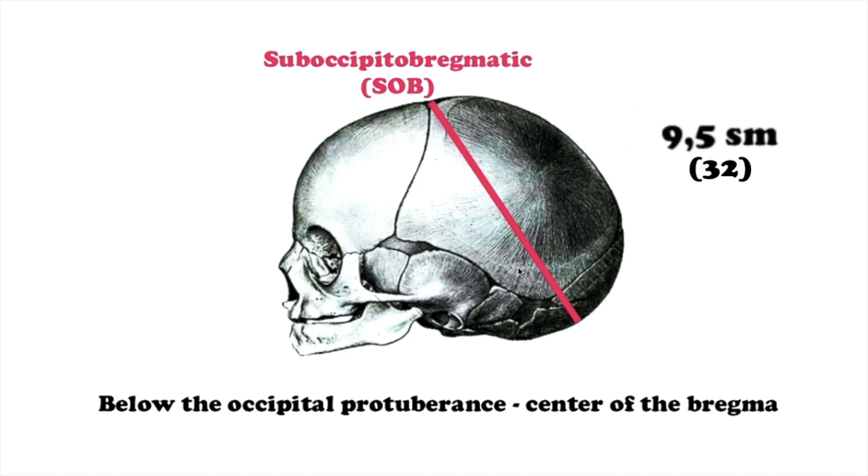The middle oblique dimension, diameter sub-occipitofrontalis, is measured from the sub-occipital fossa to the middle of the large fontanel, makes 9.5 cm. The corresponding circumference makes 32 cm.